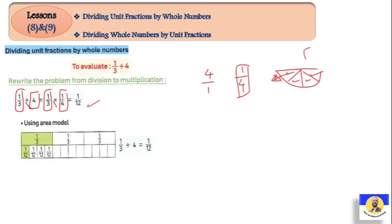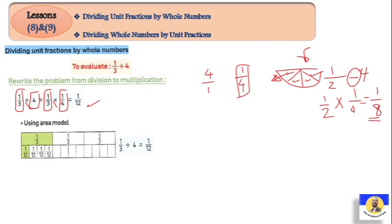Now for the pizza example of 1 half divided by 4: the answer equals 1 over 8. Because 2 by 4 equals 8. So 1 half divided by 4 equals 1 over 8.